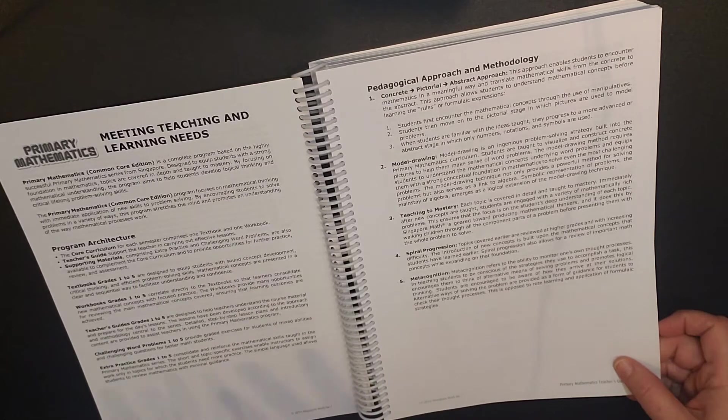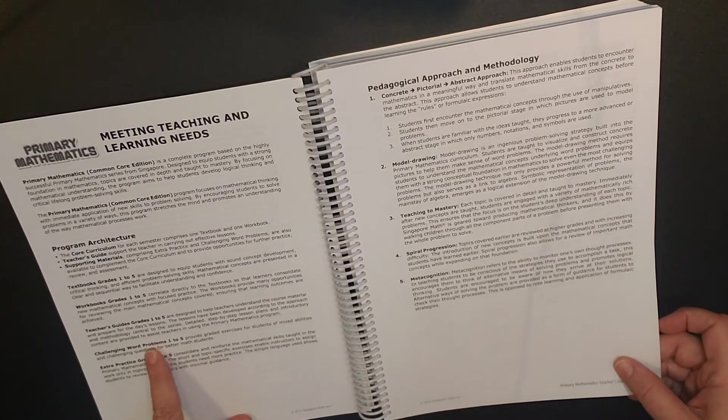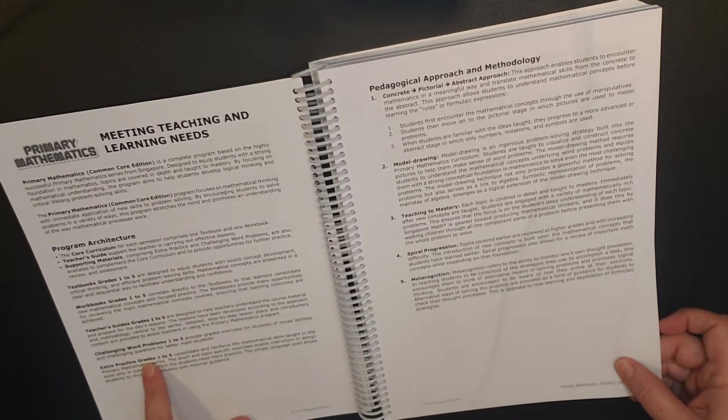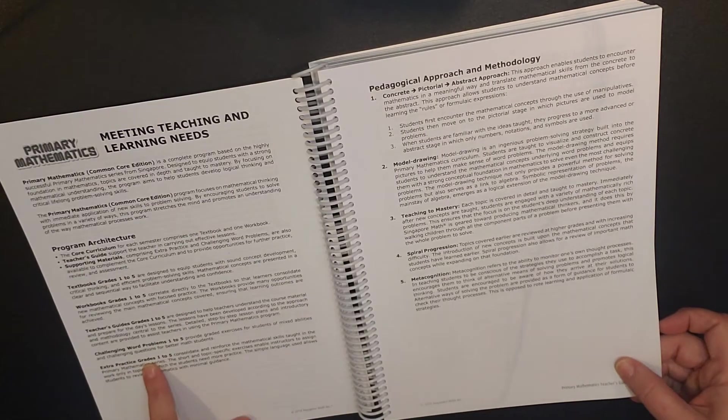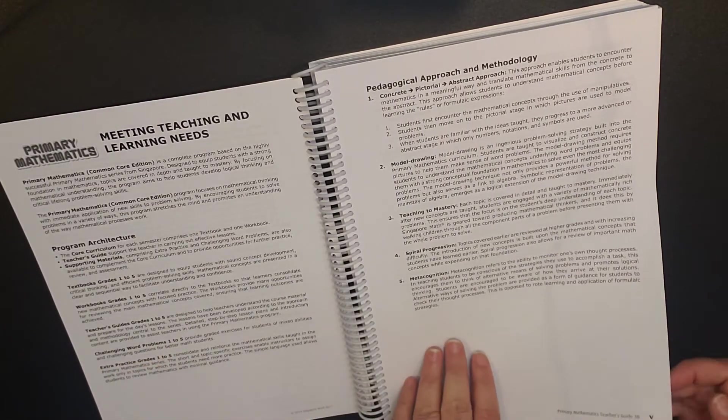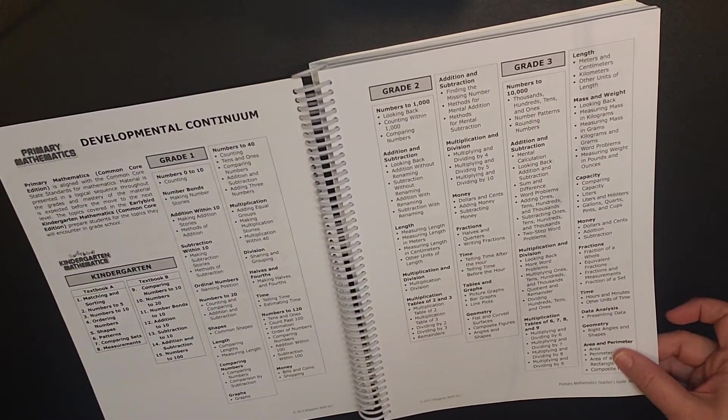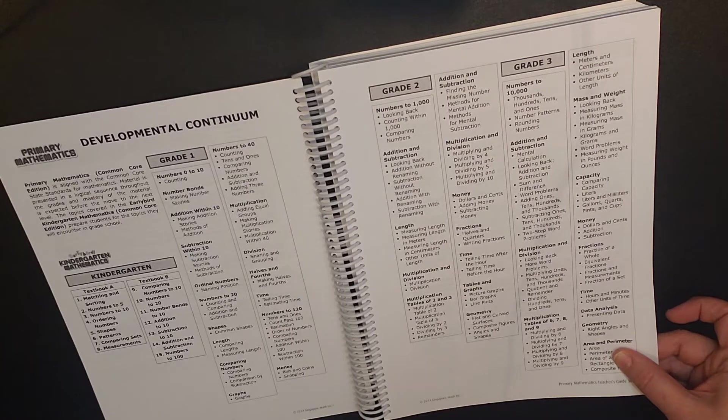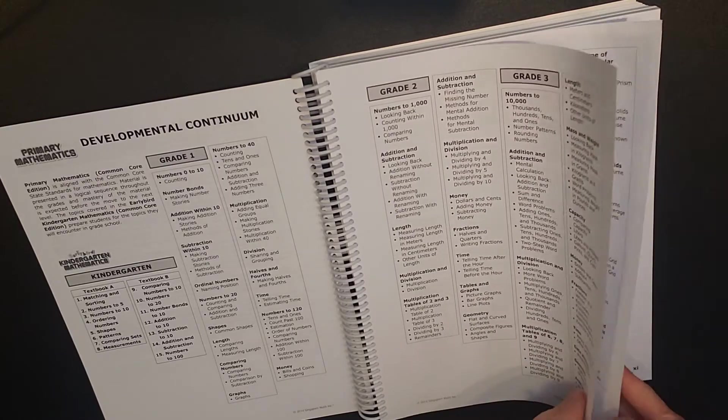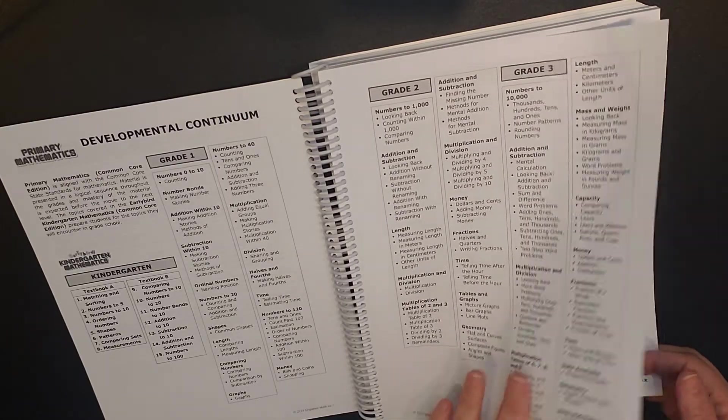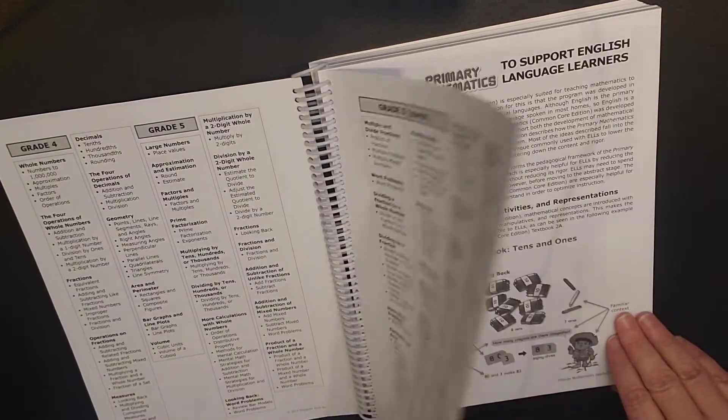For the teacher's guide, you have your table of content. And then this describes truly the Singapore method of teaching. One thing to note is for this primary common core, there are challenging word problems and extra practice for grades one through five that you can purchase. That is an additional purchase. Here is the scope and sequence for all of the primary mathematics common core edition.